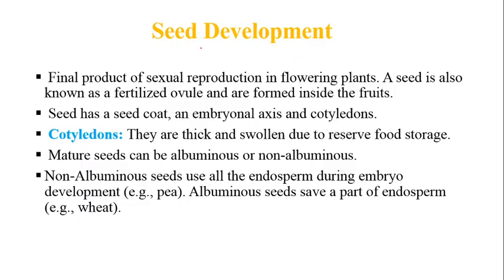Now we will talk about seed development. The final product of sexual reproduction in flowering plants is the seed. A seed is also known as a fertilized ovule and is formed inside fruits — like mango has a seed. Banana is a seedless fruit that develops without fertilization. A seed has a seed coat, embryonal axis, and cotyledons. The cotyledons are thick and swollen due to reserved food material.